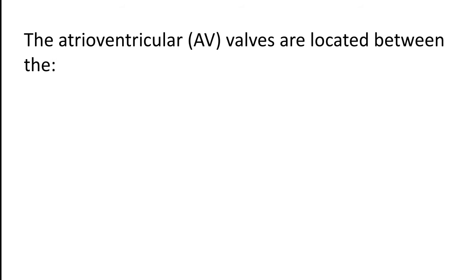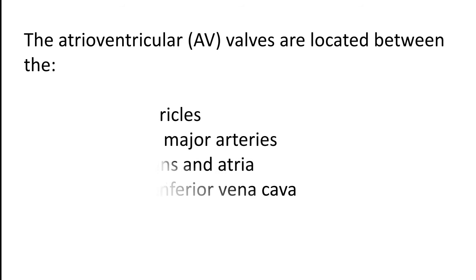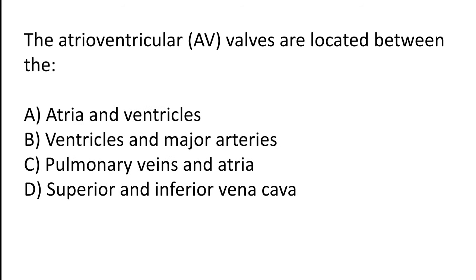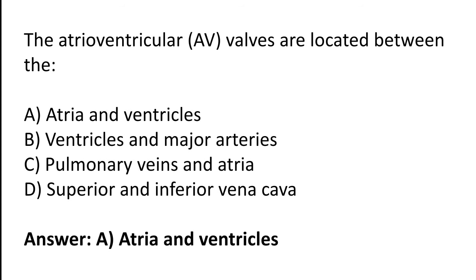The atrioventricular (AV) valves are located between: (a) atria and ventricles, (b) ventricles and major arteries, (c) pulmonary veins and atria, (d) superior and inferior vena cava. The correct answer is option A. The atrioventricular AV valves are located between the atria and ventricles.